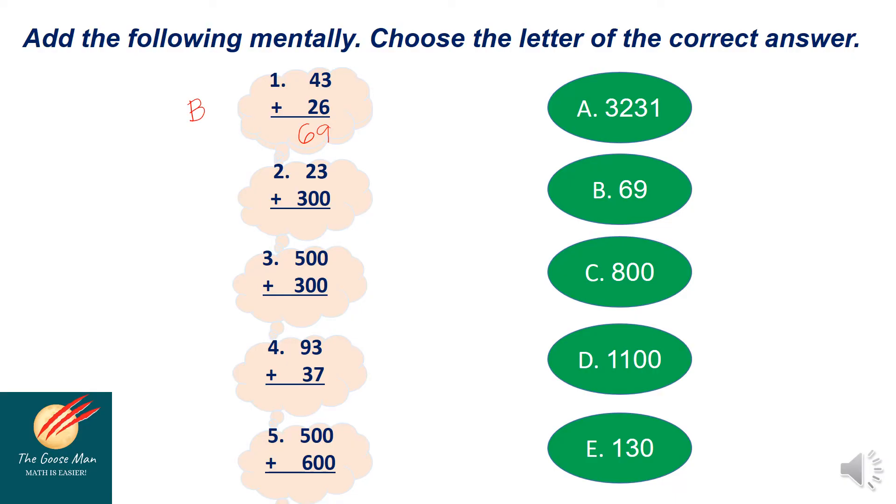Next, number two. I have here 23 plus 300. I'll simply add 23 to two zeros. I have 2 and 3 and copy 3. So the answer is letter A.